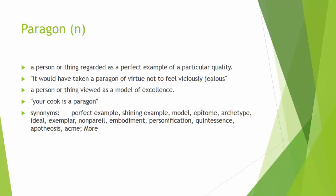Paragon. This is a noun, and it's almost always a positive thing. It means a person or thing regarded as a perfect example of a particular quality. Sentence: it would have taken a paragon of virtue not to feel viciously jealous. So a person or thing viewed as a model of excellence — like the perfect example of someone. For example, she's the paragon of the dedicated student.